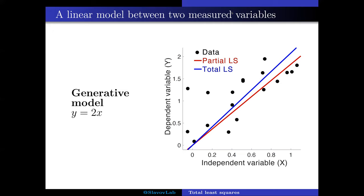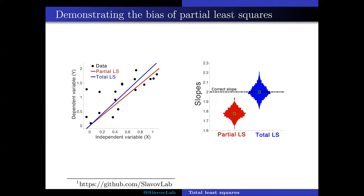The deal is that the partial least squares incurs a systematic bias, and one way to visualize this bias is to simulate the simple model a thousand times,